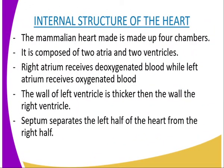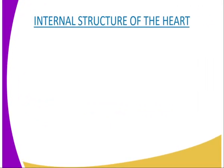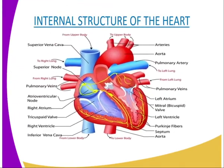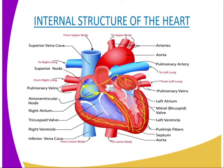The right atrium receives deoxygenated blood from the body organs except the lungs, while the left atrium receives oxygenated blood from the lungs through the pulmonary vein. I hope you are able to see the parts as I am naming them; you will be directed by the arrows, which symbolize the flow of blood. For the atria, you can also call them auricles.